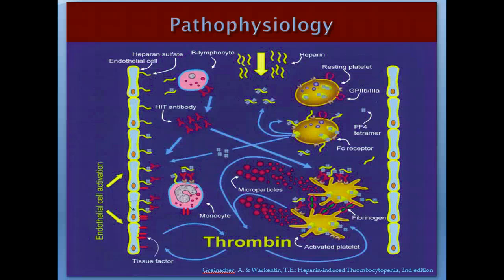A question arises: even though thrombin is generated and tissue factor appears, DIC is rare. Actually, DIC occurs in about 5 to 15 percent of HIT cases, so it's not too rare. Not everybody who has the antibody or platelet activation will develop clinical or severe HIT — it's very variable from one person to another according to platelet sensitivity to the HIT antibodies.